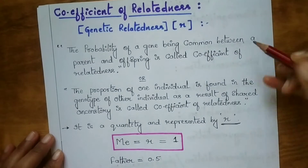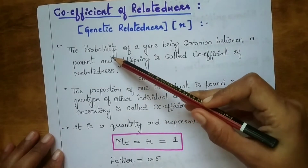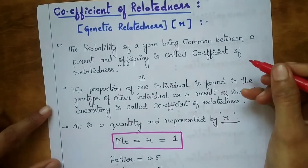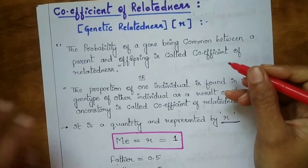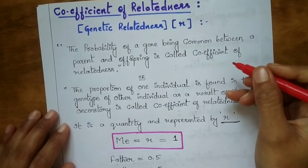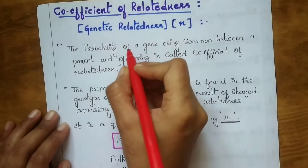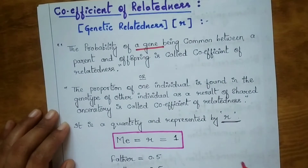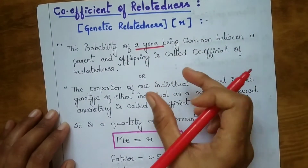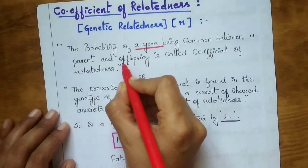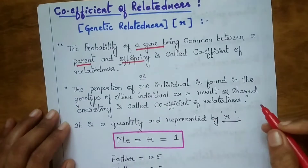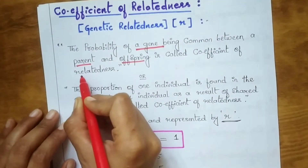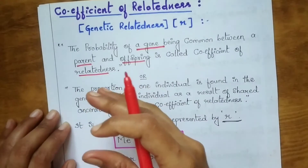Here is the definition: the probability of a gene — or you can say a allele — being common between a parent and an offspring is called coefficient of relatedness. This is important: common between a parent and an offspring.